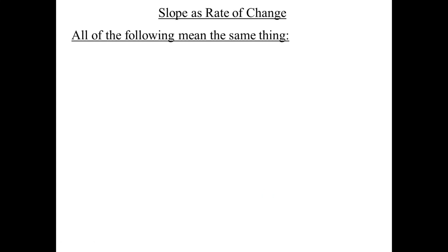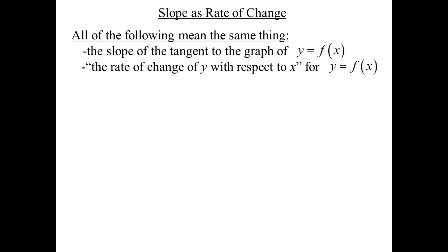All of the following mean the same thing: the slope of the tangent to the graph of y equals f of x, the rate of change of y with respect to x, and delta y over delta x, which means the change in y divided by the change in x for y equals f of x.